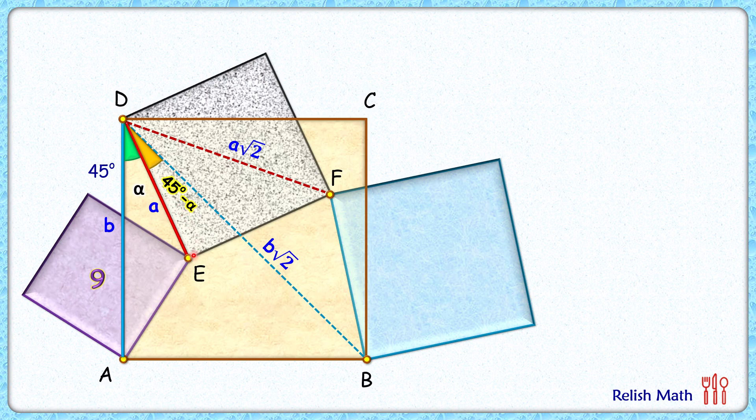Similarly, for the grey square, the angle between side length ED and diagonal DF is 45 degrees. Part of it is 45 - α, so the remaining angle will be α degrees.